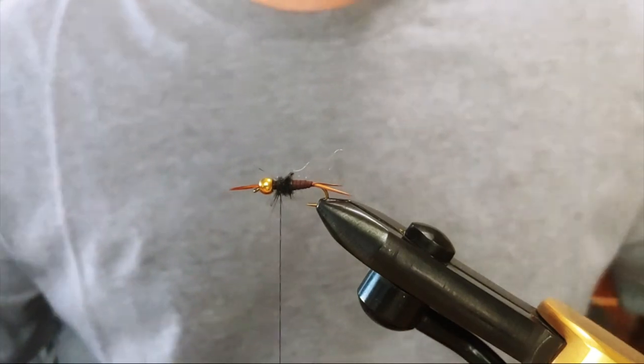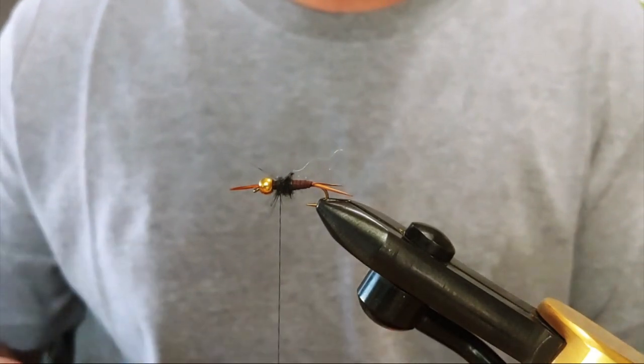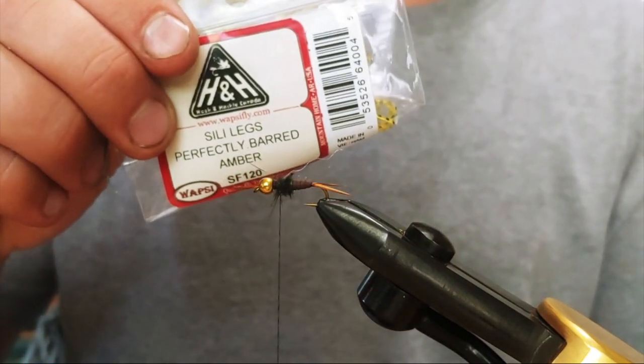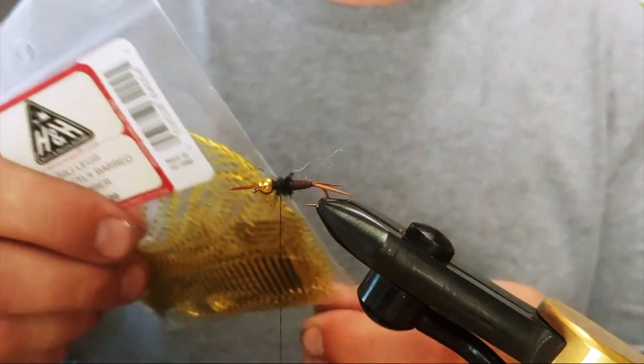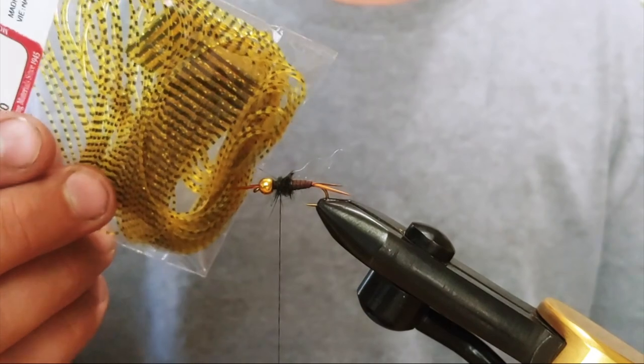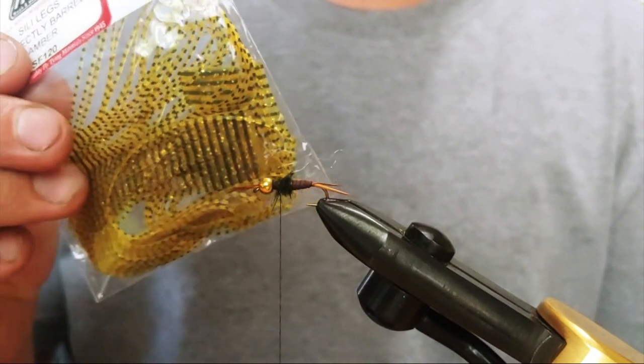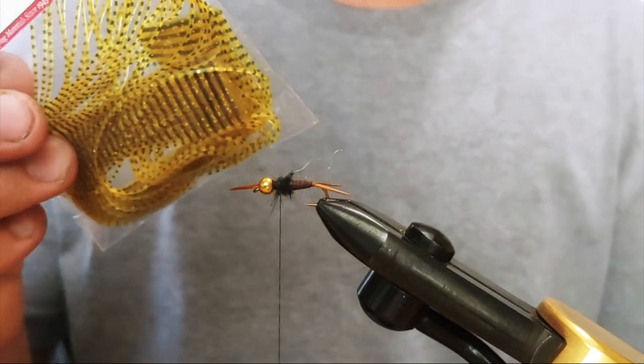I'm going to add a little bit more behind. And this is where I'm going to add in my legs. So I'm using Silly Legs. It says this is amber, but I think it's more golden than amber.